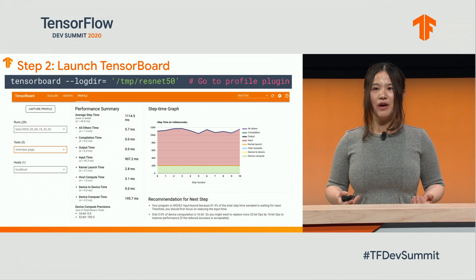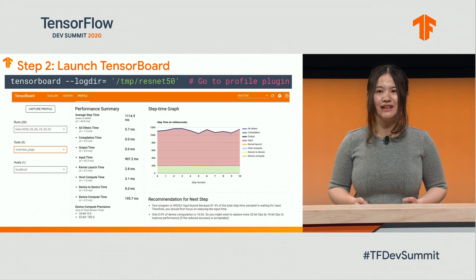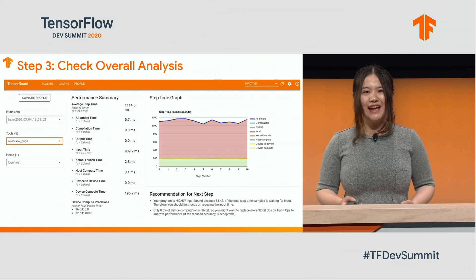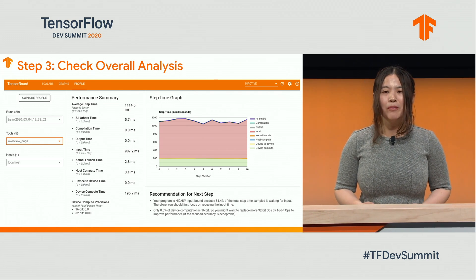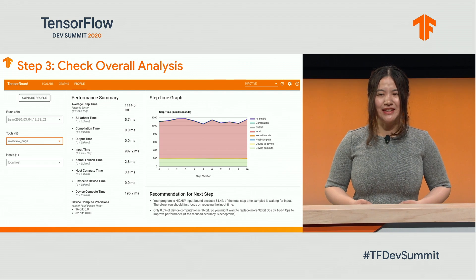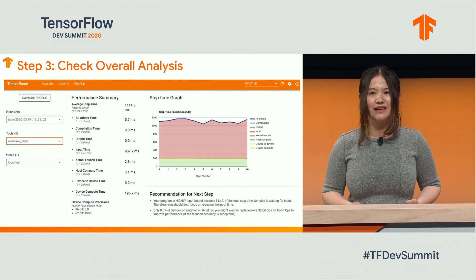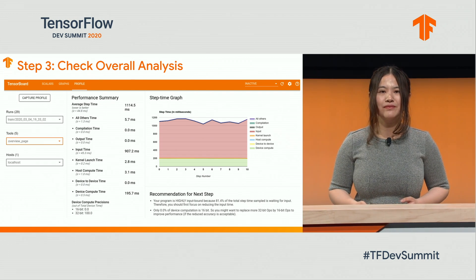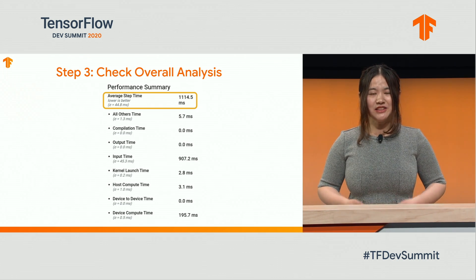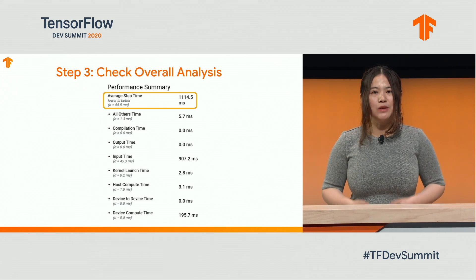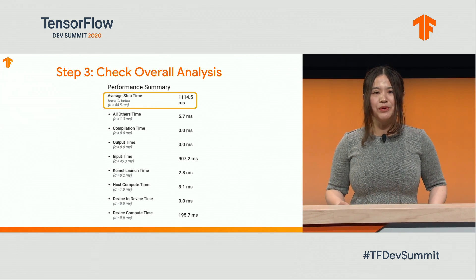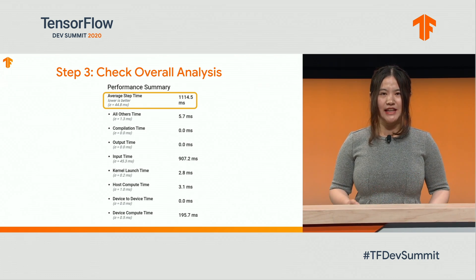Here's a performance overview. Let's zoom in and look at the Overview Page. It contains three sections: performance summary, step-time graph, and recommendations for the next step. The performance summary shows the average step-time and breaks it down into time spent on compilation, input-output, kernel launches, and communication time.